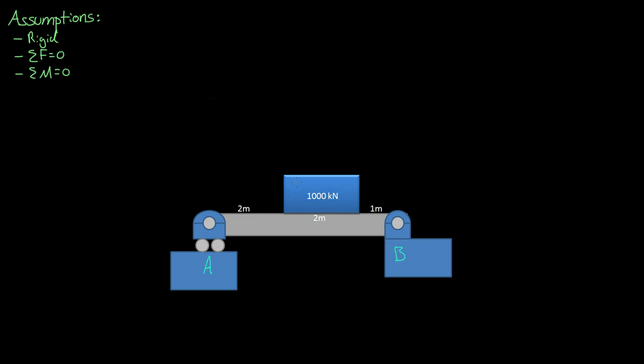So we have 1000 kilonewtons evenly distributed over 2 meters. We can change that into a force Q at one meter here and one meter here. It's going straight down, so that means Q equals Qx plus Qy, and Qx is zero if it's going straight down.